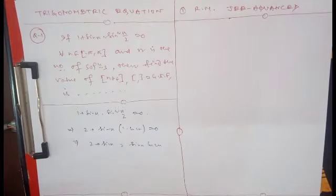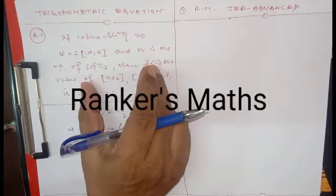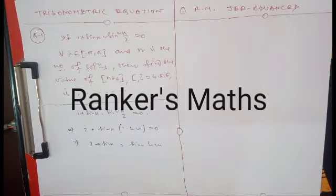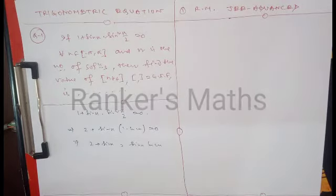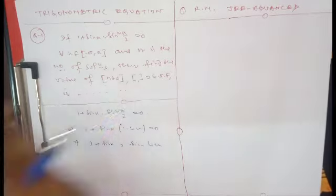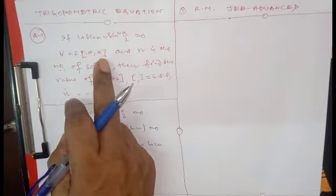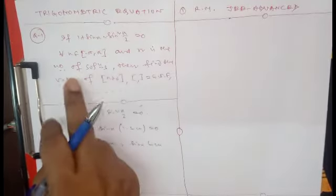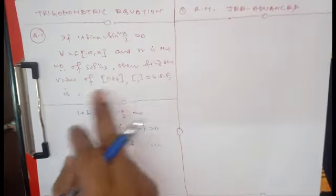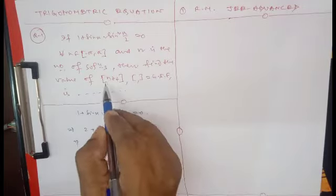This is a very good conceptual question. The question asks: if 1 + sin(x)·sin²(x/2) = 0 for every x belonging to this set, and n is the number of solutions, then find the value of the greatest integer of n + 4.